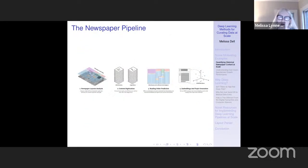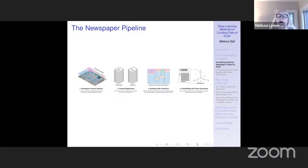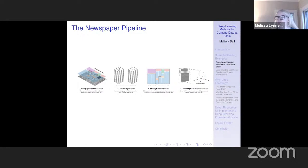Essentially what we have is a pipeline where every stage is based on deep learning methods. The first stage, we recognize the layout of the newspapers — the coordinates and classes of each individual region, whether it be article, headline, caption, header, etc. Once we have those individual regions, we OCR those, and now the structure is very simple: each of those individual regions looks like a single-column book, so it will OCR well.